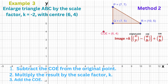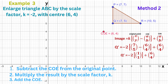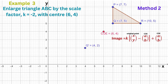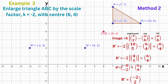Let's use the other method to perform the enlargement. We'll calculate the image of Q first. The original point Q is (7, 5). Subtract the centre of enlargement (6, 4): 7 minus 6 is 1, and 5 minus 4 is also 1. So the original point minus the centre of enlargement is (1, 1). Multiply (1, 1) by the scale factor -2 to get (-2, -2). Add (-2, -2) to the centre of enlargement (6, 4): -2 + 6 = 4 and -2 + 4 = 2. So the image of Q is (4, 2). Pause the video and calculate the image points for P and R — you should get the same image points as with the first method. Connect the points to form the enlarged shape.